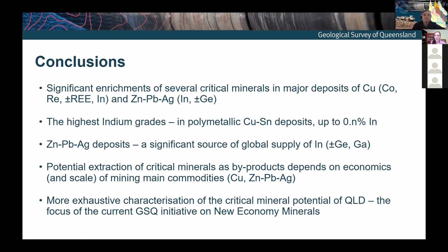Craig Wilson asks: what critical minerals are currently being produced in Queensland? There is sufficient anecdotal evidence of production of indium, germanium, and gallium, but this is not happening on Australian shores — it's a refinery business overseas. Gallium is produced from bauxites, and Australia is the global leader in bauxite production, while zinc concentrates are a global source of indium and germanium.